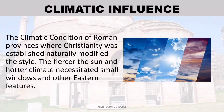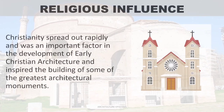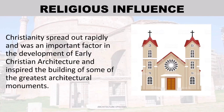Climatic influence: The climatic conditions of the Roman provinces where Christianity was established naturally modified the style. The heat of the sun and hotter climate necessitated small windows and other eastern features. Religious influence: Christianity spread rapidly and was an important factor in the development of early Christian architecture, inspiring the building of some of the greatest architectural monuments.